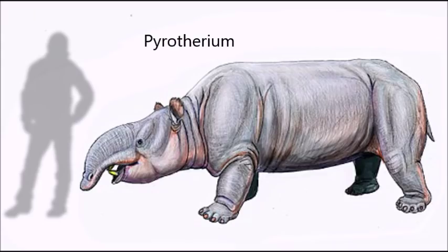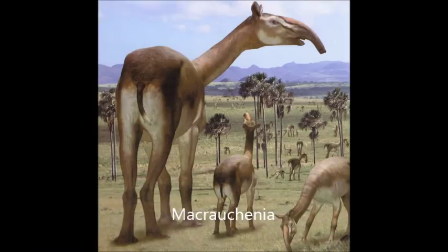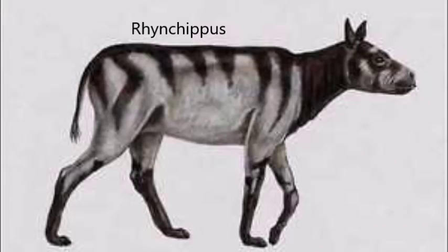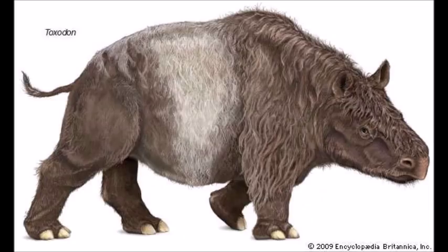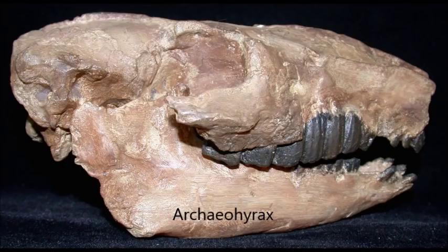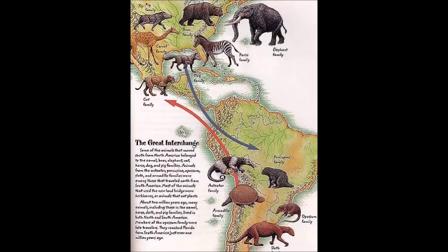South America produced many convergently evolved forms, including the elephant-like Pyrotherium, the camel-like Macrauchenia, the horse-like Thoatherium, the rabbit-like Pachyrukhos, the hippo-like Toxodon, and the hyrax-like Archaeohyrax. When South America connected with North America around three million years ago, an exchange occurred between animals and plants of both continents called the Great American Interchange.